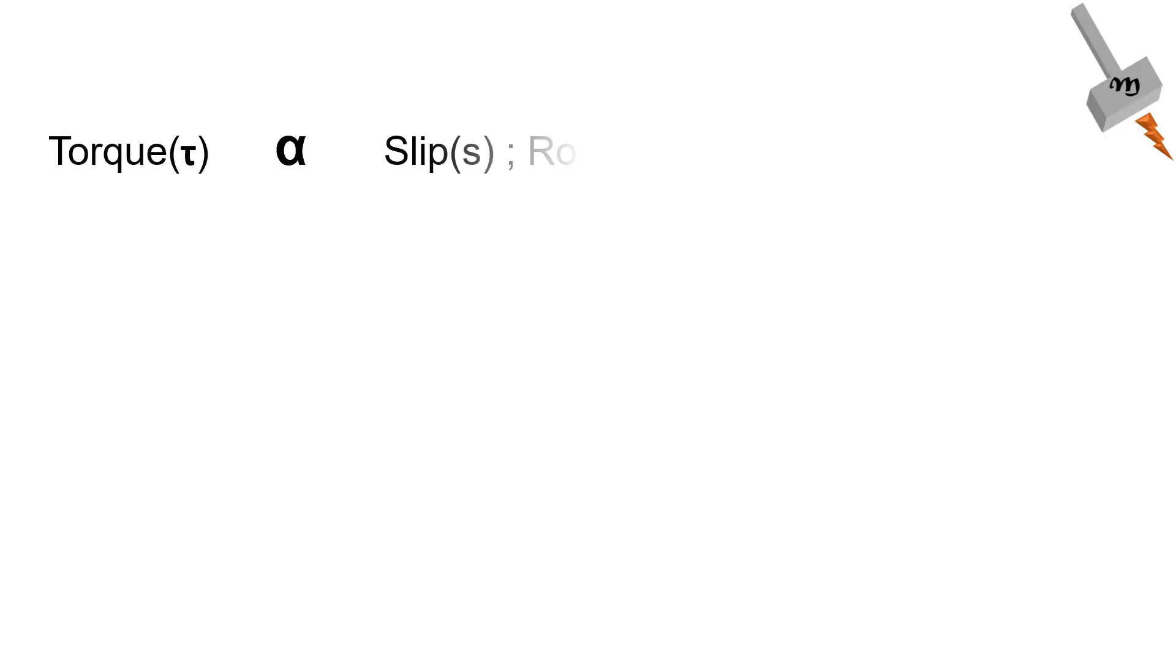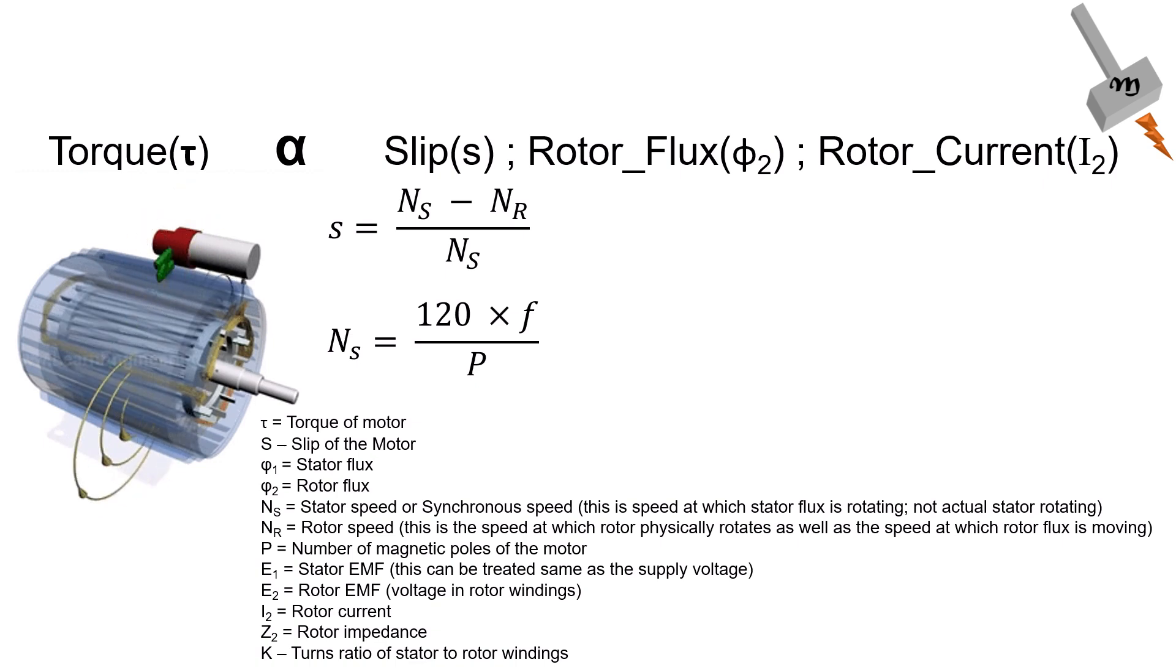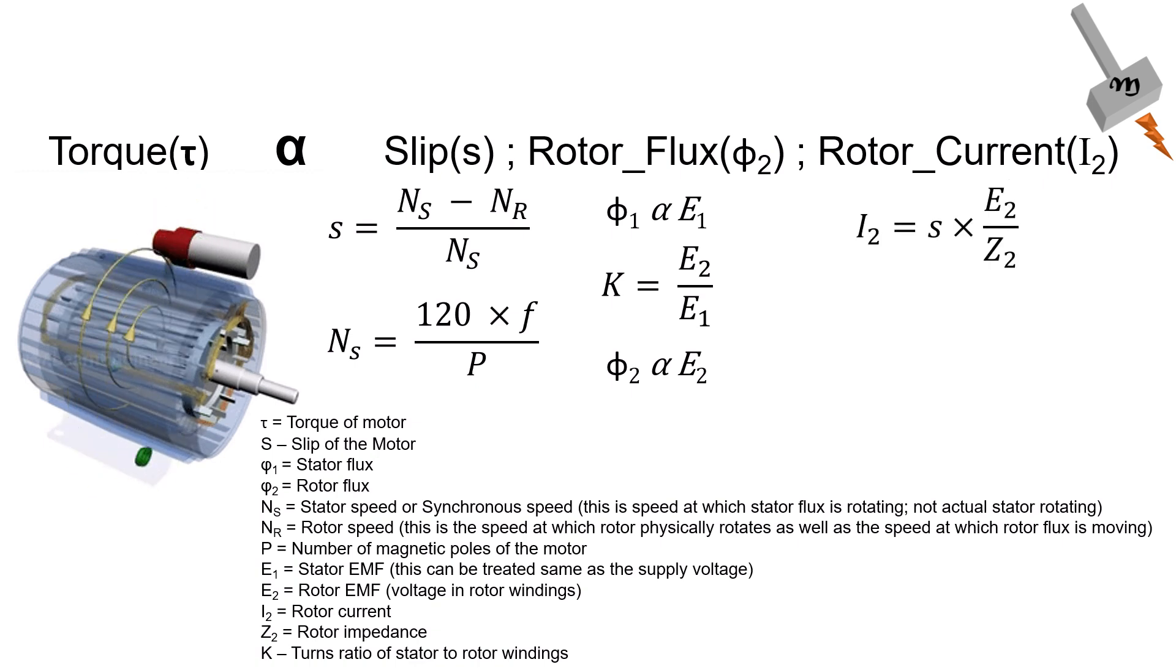Torque is proportional to slip, rotor flux, and rotor current. Slip of a motor is the relative difference between synchronous speed, which depends on the supply frequency and rotor speed, and is responsible for linking stator flux with the rotor windings, thus creating the rotor flux, which is responsible for magnetizing the rotor and generation of rotor EMF, which in turn causes the rotor current to flow in the windings, thus creating the torque in the rotor shaft.